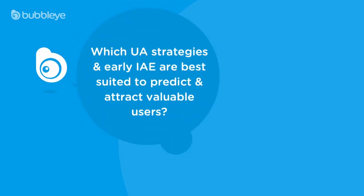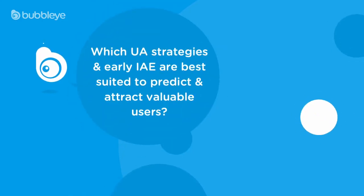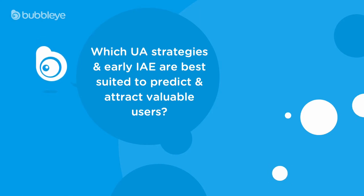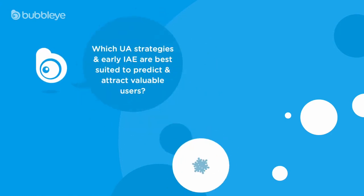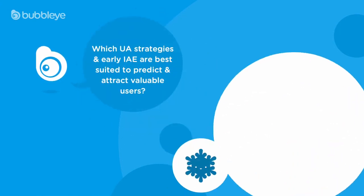Talking about whale-driven games, since the search for valuable users for hardcore social casino and forex apps can be much more difficult to predict with early in-app events, what UA strategies do you think are best suited?